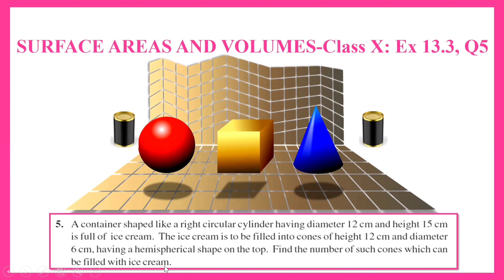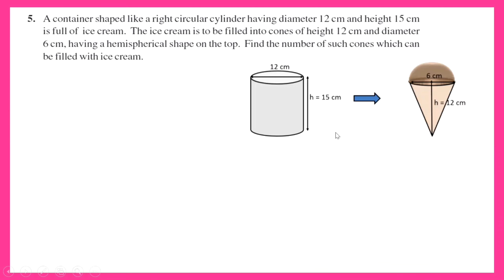I hope you all have seen how an ice cream cone looks like, and on that you can imagine a hemispherical ice cream scoop on it, from the container shaped like a circular cylinder which has the ice cream. That ice cream has to be filled into cones. So this is the cylindrical container containing the ice cream, and it has to be changed into a number of cones having a conical base and a hemispherical top. The combined volume of all the ice cream in these cones with the hemispherical top will be equal to the volume of this cylinder.